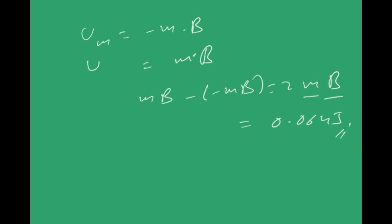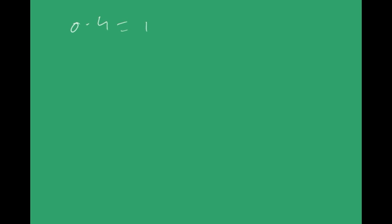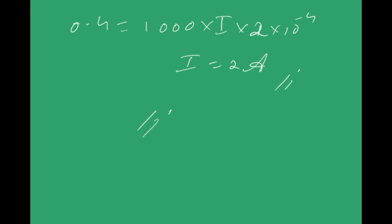The bar magnet is now replaced by a solenoid of cross-sectional area 2×10⁻⁴ m² with 1000 turns. The magnetic moment of the solenoid is m = nIA. Setting this equal to 0.4 A·m²: 0.4 = 1000 × I × 2×10⁻⁴, which gives I = 2 A. So passing 2 A through this solenoid makes it equivalent to the given bar magnet.